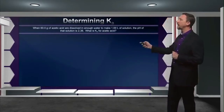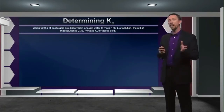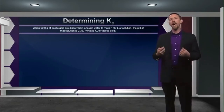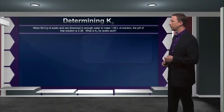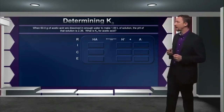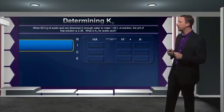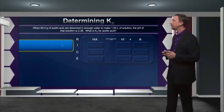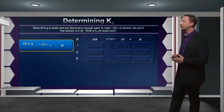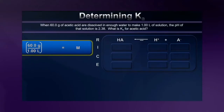Let's go through that one time. Say we make a solution containing 60.0 grams of acetic acid dissolved in enough water to make one liter of solution, and we measure the pH at 2.38. What does that tell us about Ka for acetic acid? We'll use our RICE table. The initial concentration is 60.0 grams divided by the molar mass of acetic acid — approximately 60.0 grams per mole — giving us a one molar solution. We put that in as our initial concentration of HA, and acknowledge that before equilibrium is established, H⁺ and A⁻ are zero.